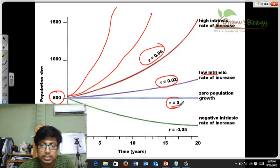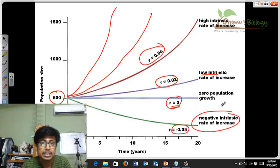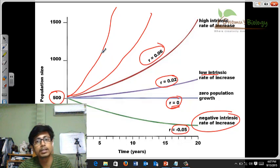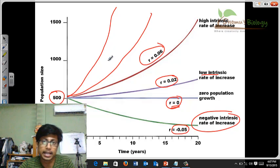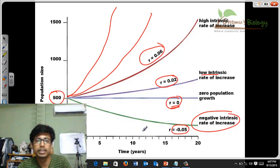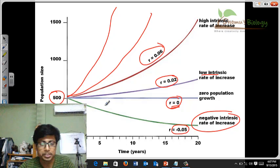But if the intrinsic rate gets less than 1, in minus value, less than 0 is in minus value like minus 0.05, that means they have a negative intrinsic rate. That means here in this population the organisms are dying more than being born. So their death rate is higher than birth rate. So obviously the population will go down, the number of individuals will go down and that is the end of the population.